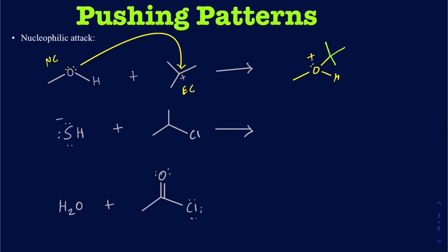In another example, I have SH⁻ acting as the nucleophile attacking a second compound. The electrophile here is the carbon in a carbon-chlorine bond, which is polar — chlorine is partial negative and carbon is partial positive. Keep in mind, this carbon already has four bonds including a hydrogen that isn't shown. In the previous case, the carbon had a positive charge and only three bonds, which is why the nucleophile could attack directly onto it.